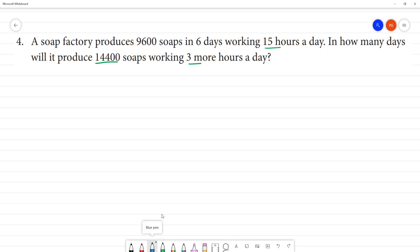Now we have a question about a soap factory. 9600 soaps is work. How much work is done? 9600 soaps are prepared.